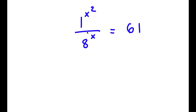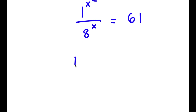In this problem, I have 1 to the power of x squared over 8 to the power of x is equal to 61. To solve this: 1 to the power of any number equals 1, meaning 1 to the power of x squared is simply equal to 1. So now I have 1 over 8 to the power of x is equal to 61.